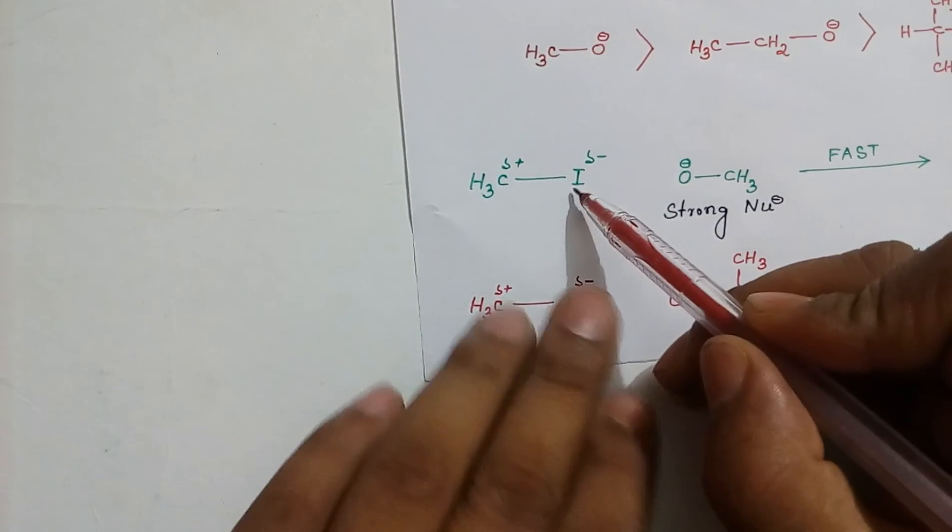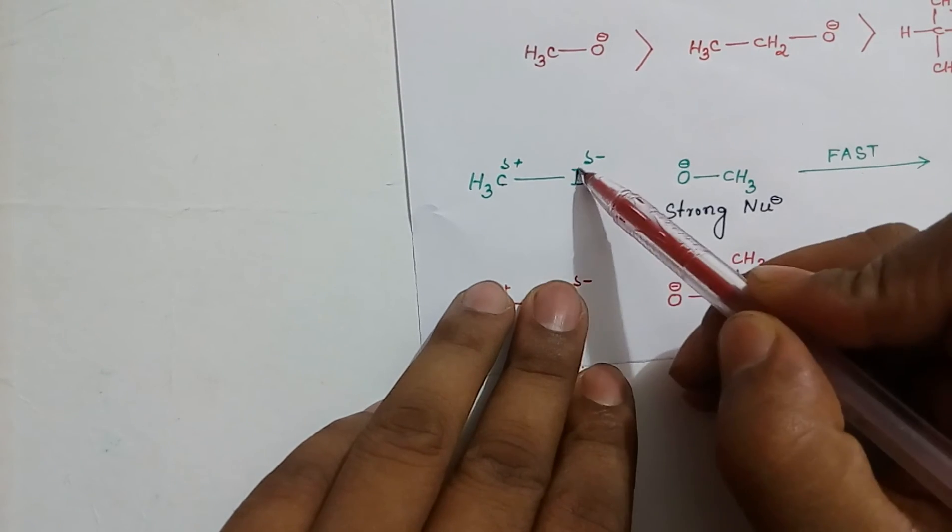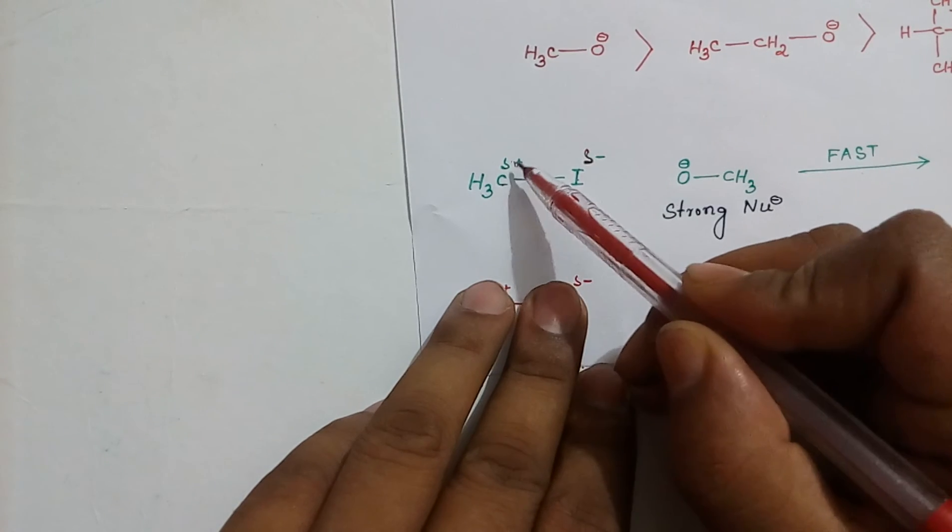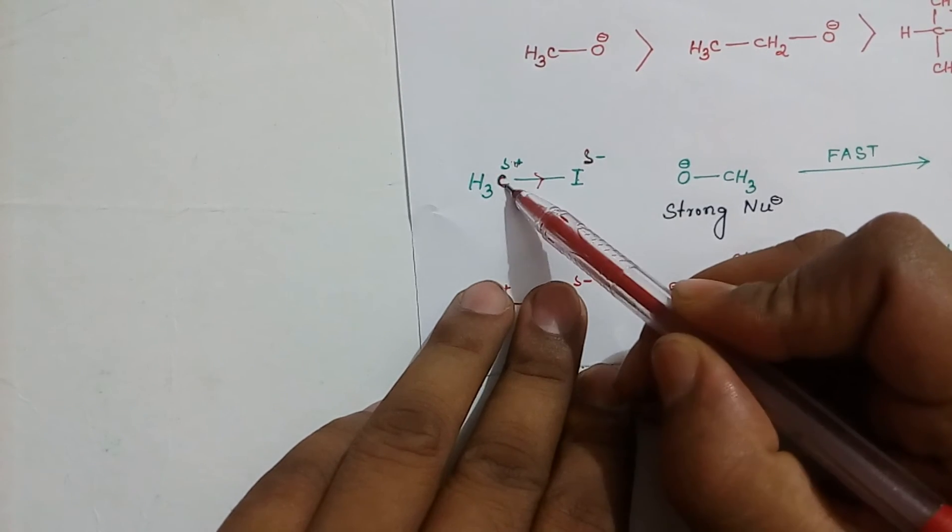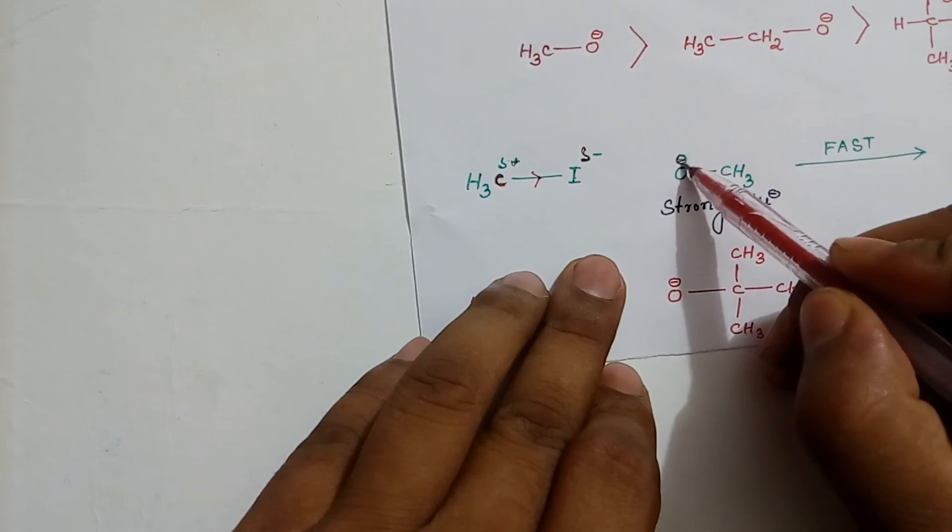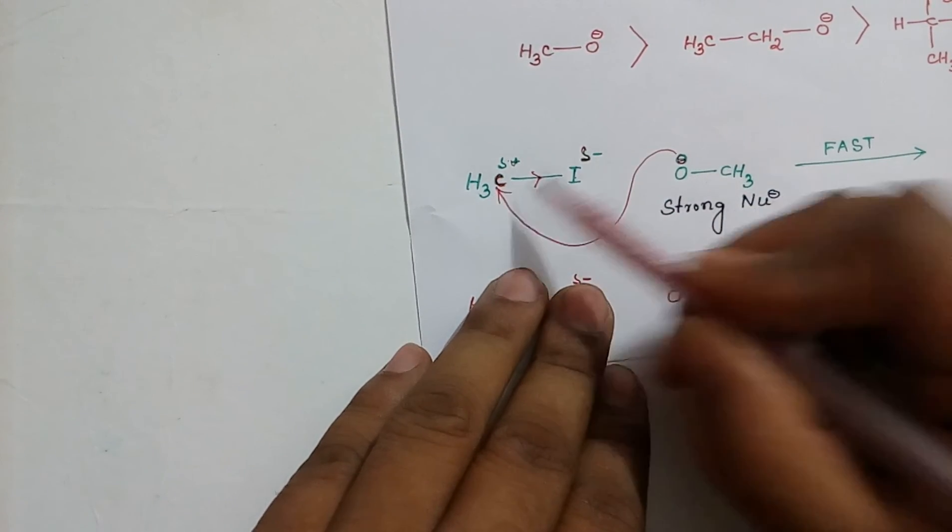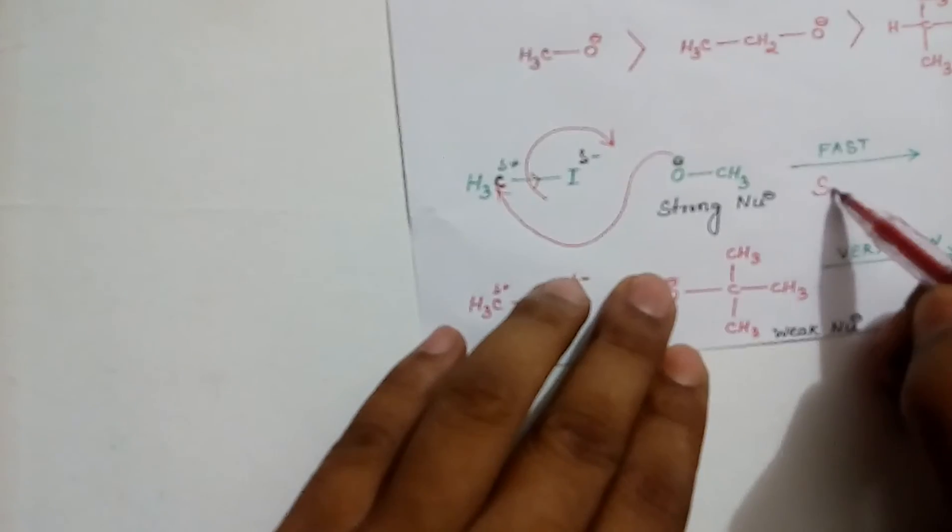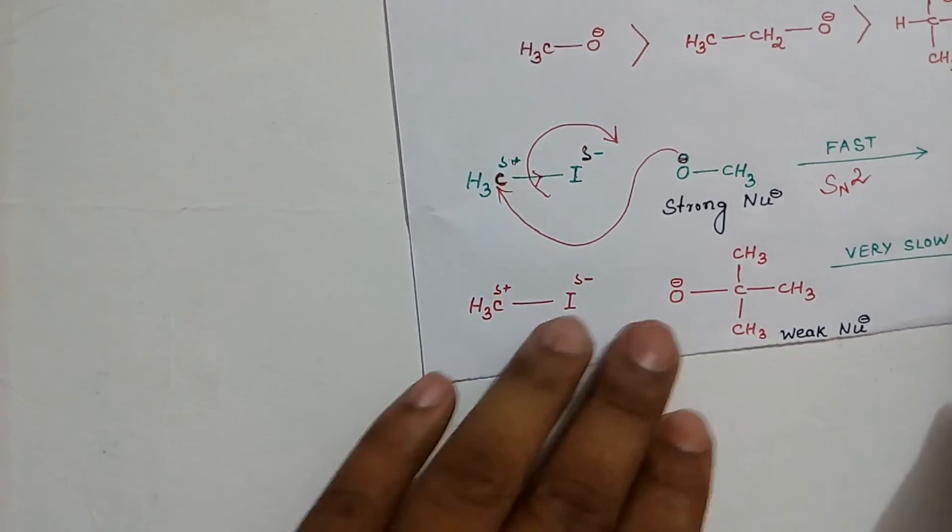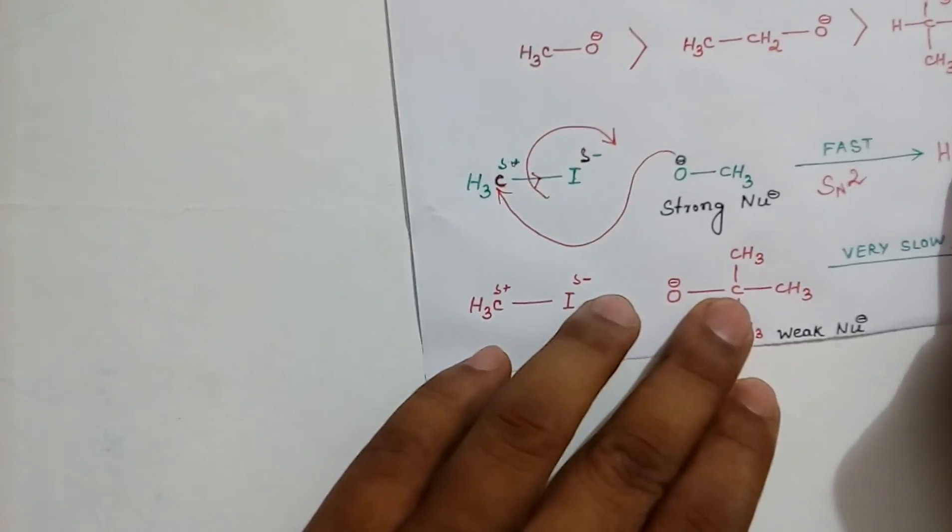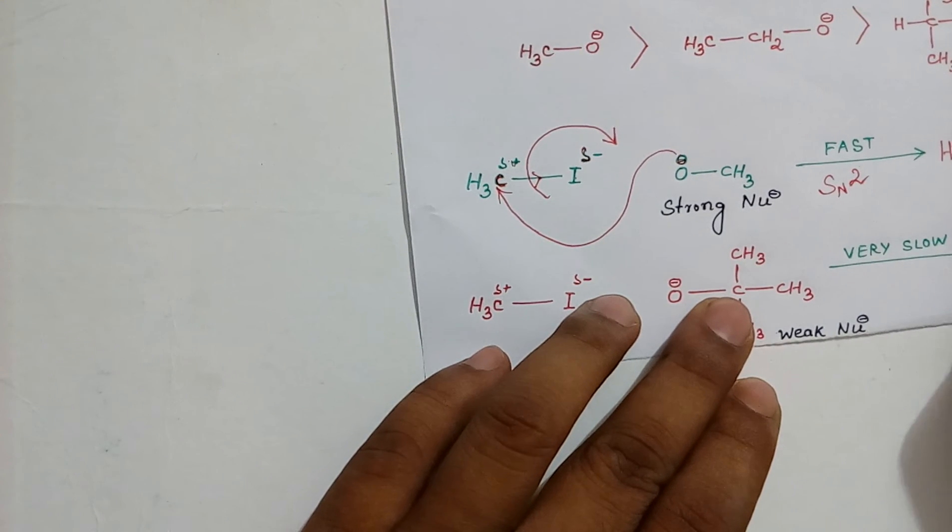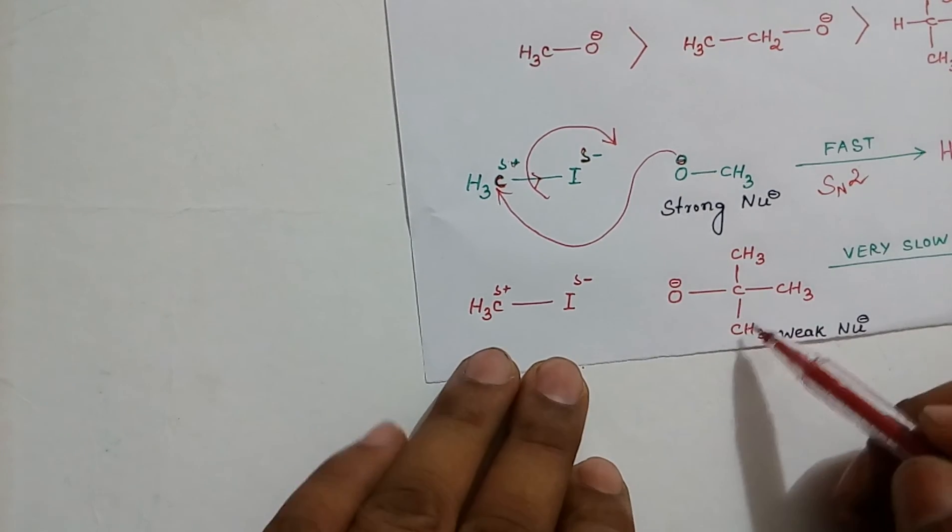Methyl iodide. This bond is polar bond. Iodine is more electronegative. So, this bond will pull towards it, making it del-negative and del-positive. So, this carbon is electrophilic center. Now, O- is nucleophilic center. It will attack this carbon and this bond will be broken heterolytically. This is an SN2 reaction. Thus forming OCH3. This reaction is very fast. Plus I-. Very fast.